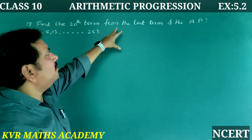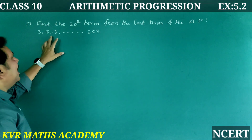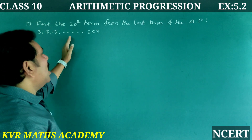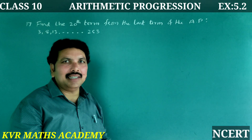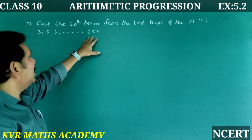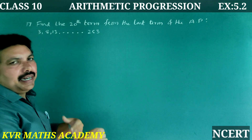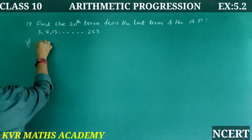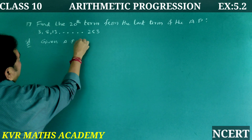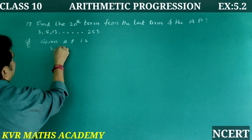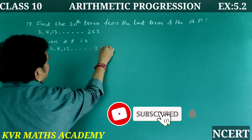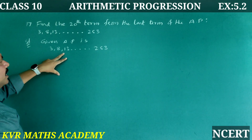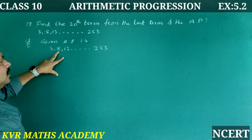Next, the 17th problem: Find the 20th term from the last term of the AP 3, 8, 13, …, 253. Here d = 8 − 3 = 5. To find the 20th term from the last, we reverse the AP starting from 253, so the new sequence is 253, 248, 243, … with d = −5.